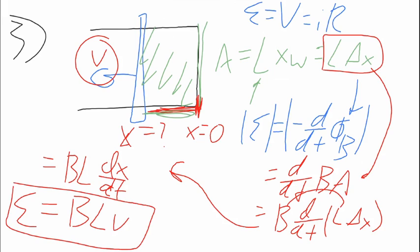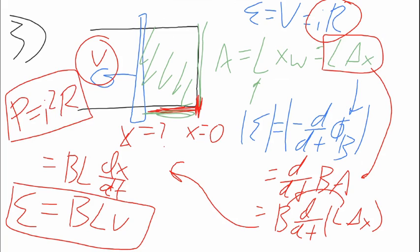In this particular problem we have to find the EMF, then set it equal to IR, plug in a resistance to find the current, and they also ask about the rate that energy is being transferred to thermal energy. The rate of energy change is always power. Power with a resistor is I²R — that's the equation you'll use. You could also do V²/R with the EMF; they should give you the same answers.